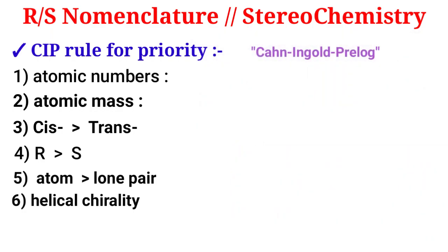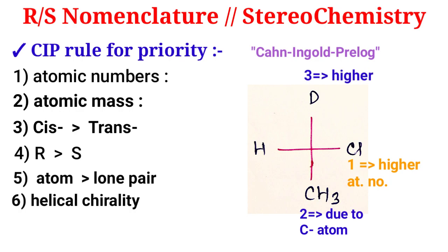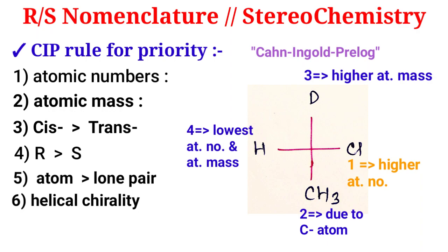Now let's look at a worked example for priority order. Number one priority is assigned to the chlorine atom due to its higher atomic number. The second priority is CH3, because carbon has a medium atomic number. For the third and fourth, hydrogen and deuterium have the same atomic number but different atomic masses, so deuterium gets higher priority — deuterium is number three and hydrogen is number four.